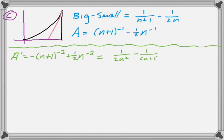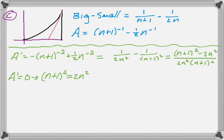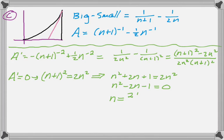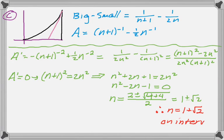I simplify this a bit because I need to find the zeros of this function, which is not the easiest thing. Setting it equal to zero means the numerator equals zero, so I manipulate and expand, trying to get something whose zeros I can find. I had to use the quadratic formula because I knew I wouldn't be able to factor it. Simplifying gives two candidates, but I need n between 0 and 1 — and (1 minus radical 2) is not in that interval. So the only critical point on the interval is n equals (1 plus radical 2).